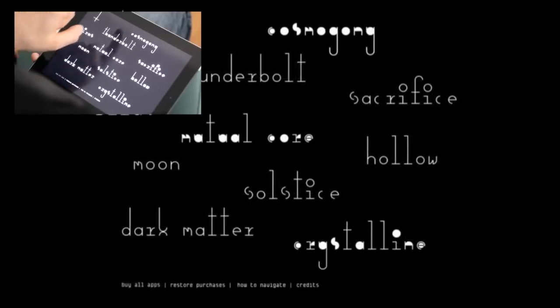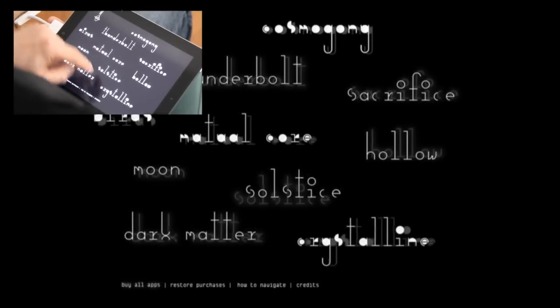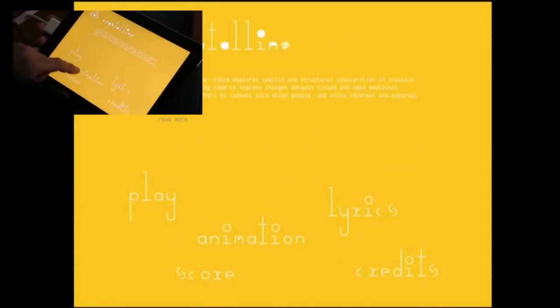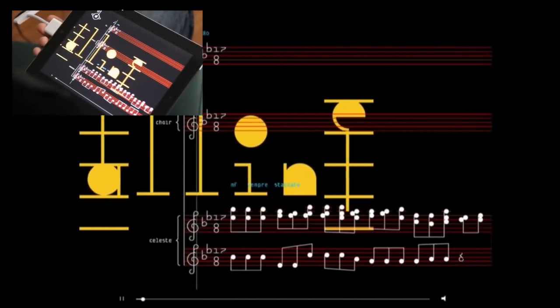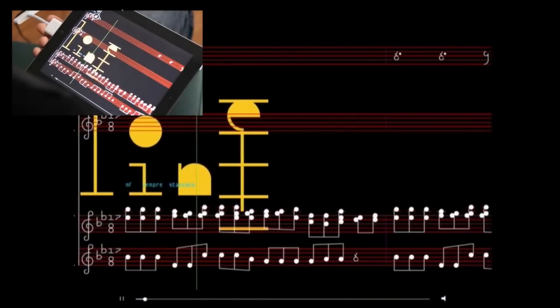So every app has a bunch of sideshows and the main event. One of the sideshows is this score, and the score isn't a score in a game but rather the musical score. You start to see the music here of Crystalline and it plays back as if this was a kind of karaoke machine.